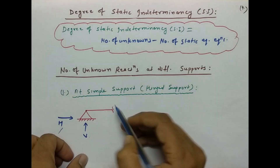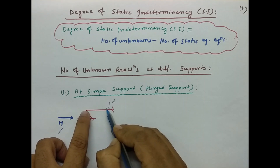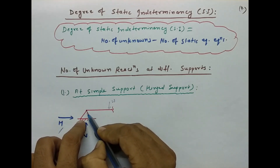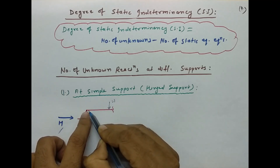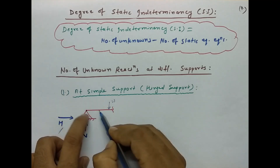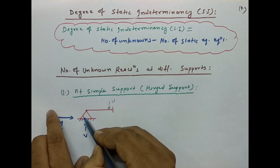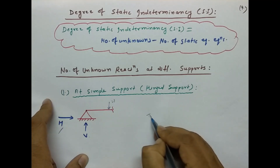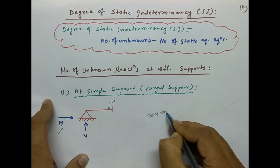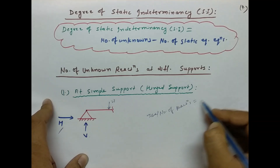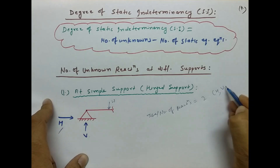Force लगने पर beam का portion rotate होगा, लेकिन यह hinge है — यानि यह free to rotate है। इसलिए यह support beam को rotate होने से resistance नहीं करेगा, और moment resistance produce नहीं होगा। Simple support के case में total number of reactions 2 होते हैं — एक horizontal direction में और एक vertical direction में।